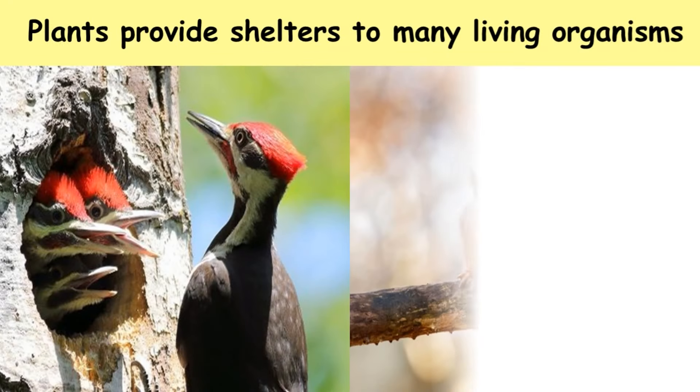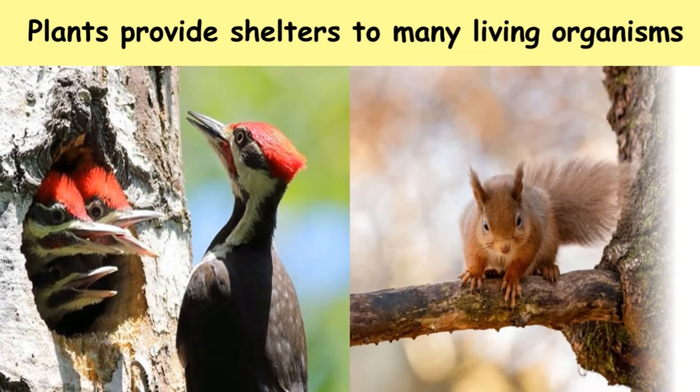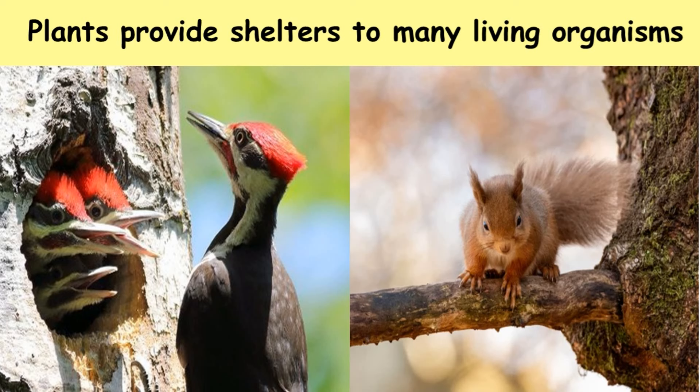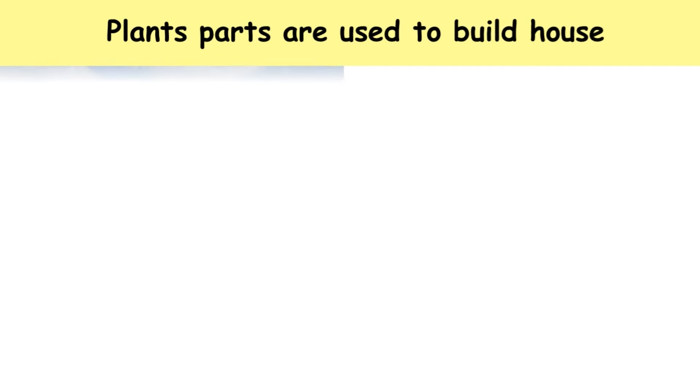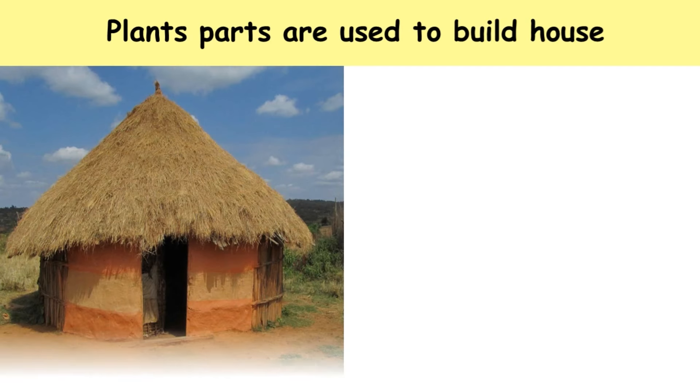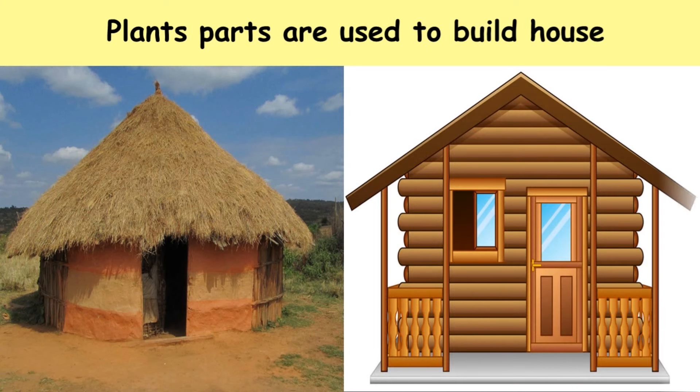Plants provide shelter to many living organisms, like species of insects, worms, mammals, birds, and reptiles. Every single tree is the reason for the survival of all living organisms on earth. Plant parts are also used to build houses.